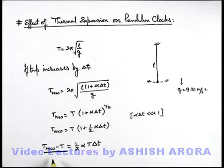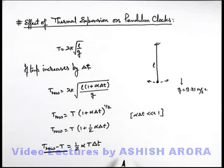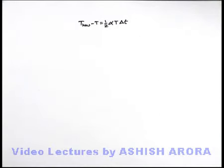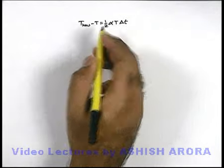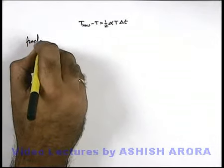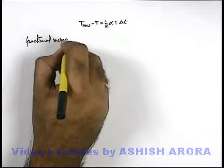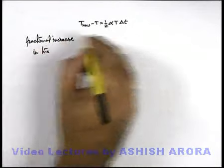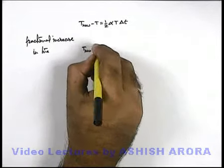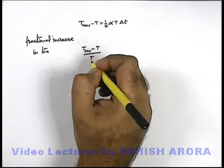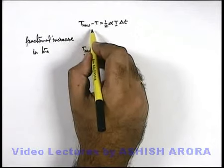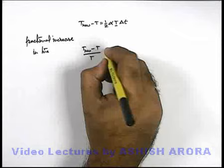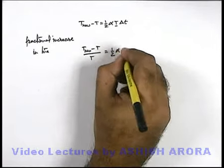If we find out the fractional increase in time per unit time, we divide by T. So (T_new − T)/T gives the fractional increase in the period of the pendulum clock — this is the increase in time per unit time, because in a duration T, this much increase was effected due to the rise in temperature. So this fractional increase in period equals ½αΔT.